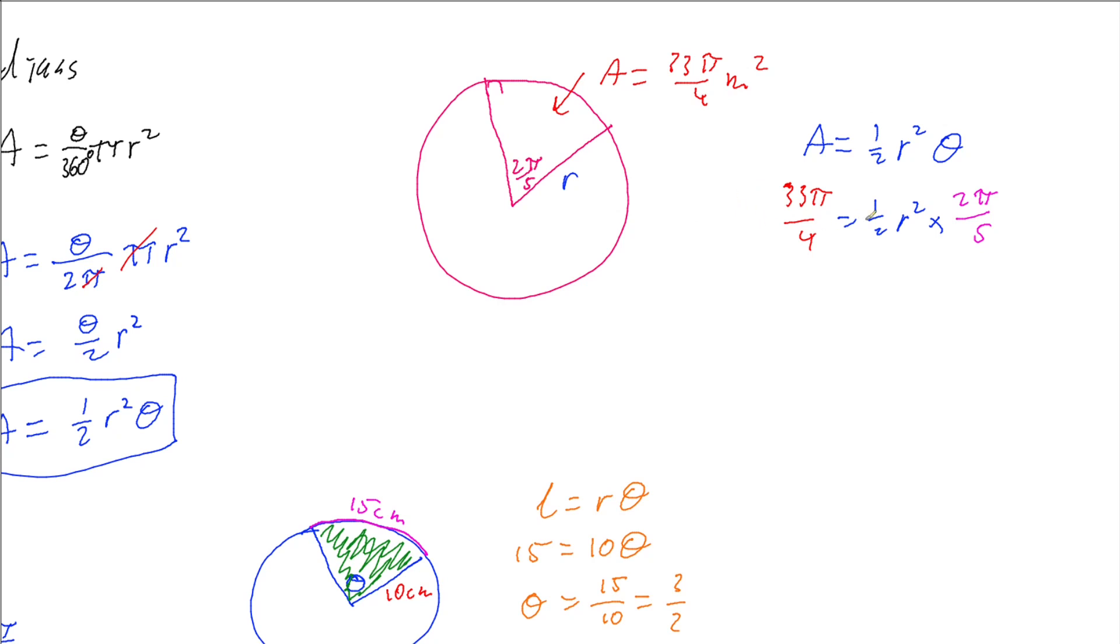And so looking at this, we can do some simplifying. My half cancels out with the 2. And our π is going to cancel out on both sides. So now I'm left with 33 over 4 is equal to our radius squared over 5. And so that means that if I multiply both sides by 5, 5 times 33 is 165.